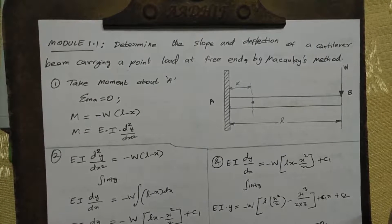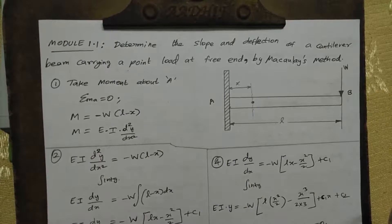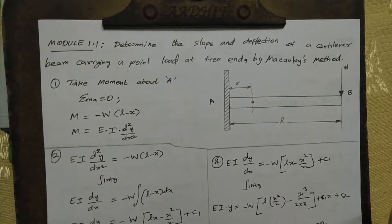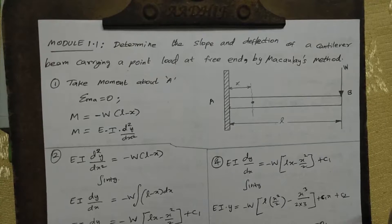Unit number 4, deflection of beams. The deflection of beams using Macaulay theory. In theory, most of the methods are very important. First one, double integration. Second one, area moment method. And third one, conjugate beam method.